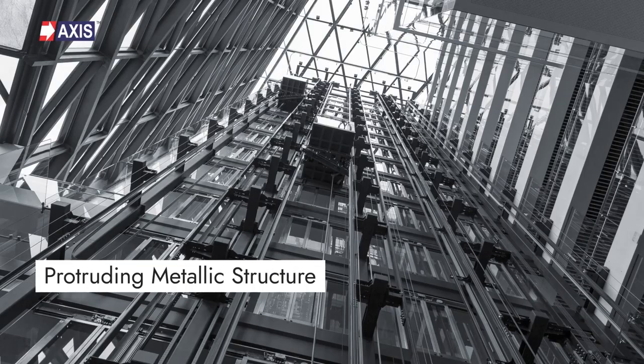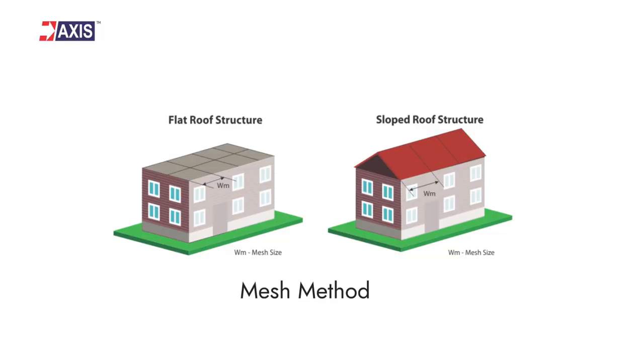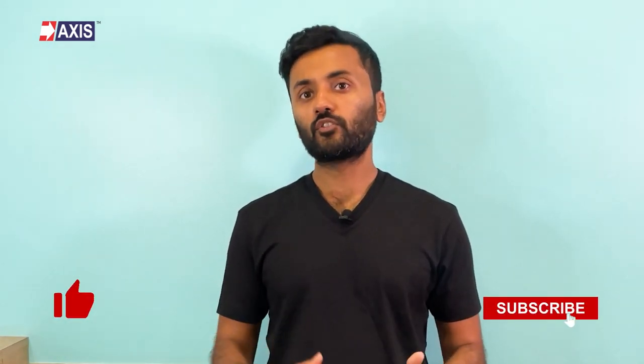For structures with a protruding metallic structure, the protective angle method is generally used as a supplement to the mesh method. We have explained the rolling sphere and the mesh method in our blogs — the link is in the description. We also have a detailed video about the rolling sphere; you can find the link here and in our description. If you like this video, please subscribe to our channel for more videos about lightning protection and electrical engineering.